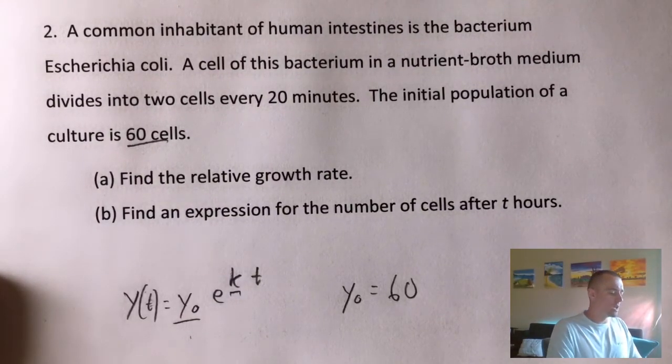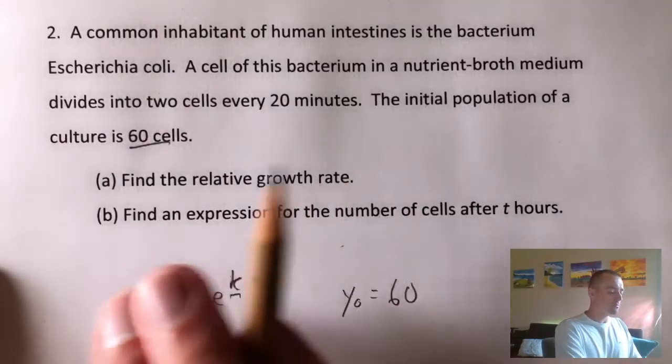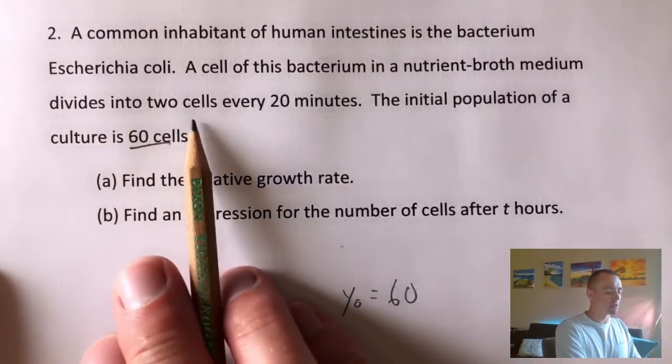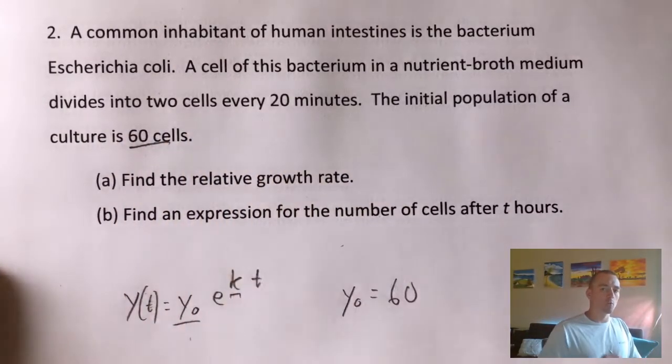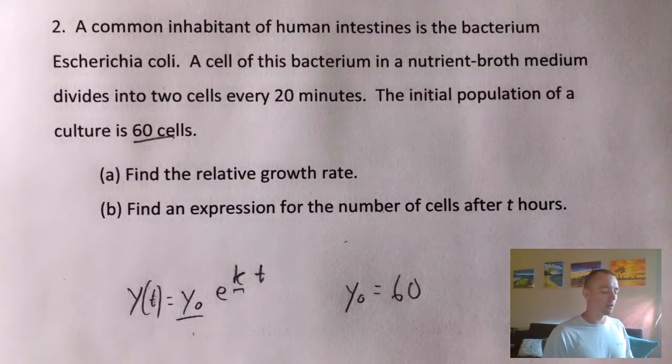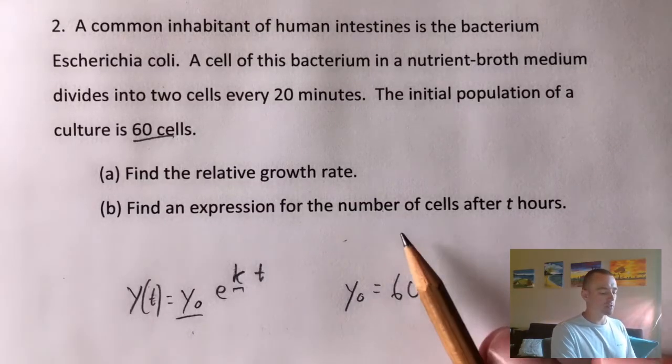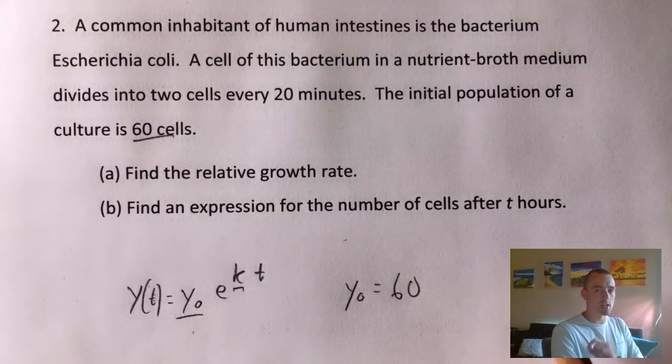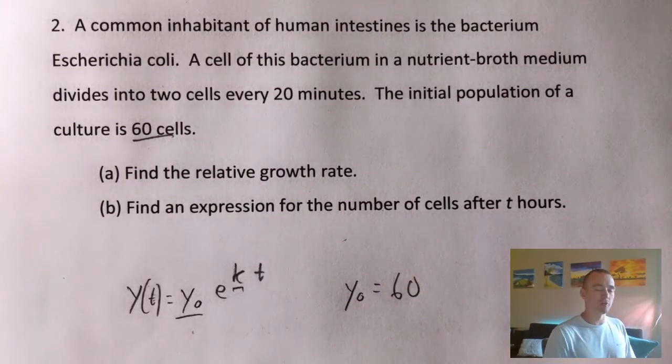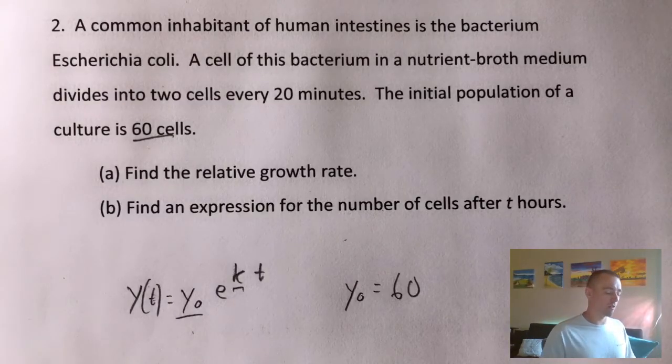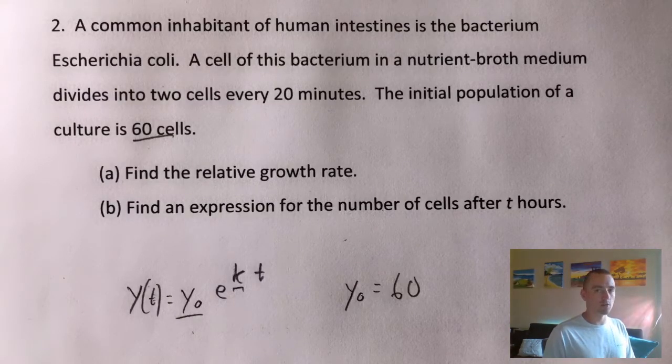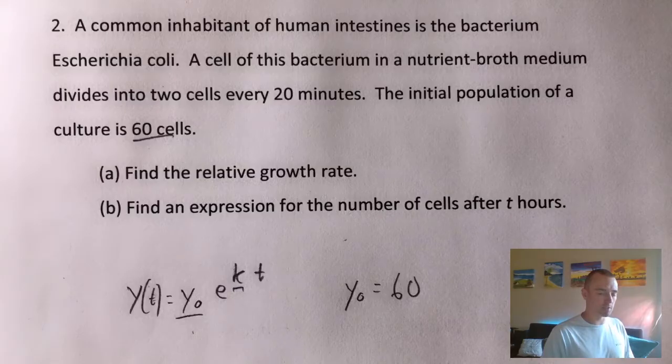Well, if we know that each cell is going to divide into two cells every 20 minutes, we can figure out how many cells there are after 20 minutes, or 40 minutes, or an hour. Since our expression is meant to represent the number of cells after t hours, I would say probably figuring out how many cells we have when t is one, so after one hour is probably going to be the easiest option for us.